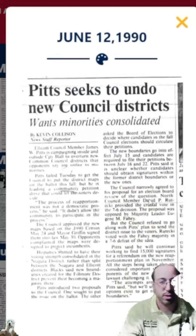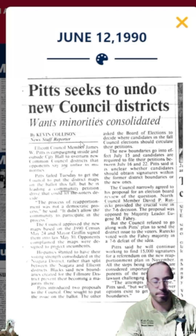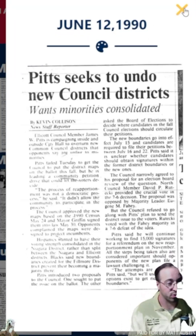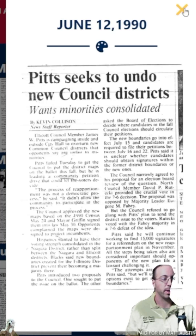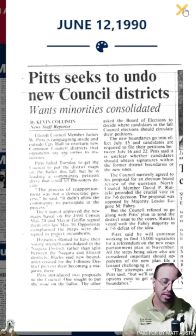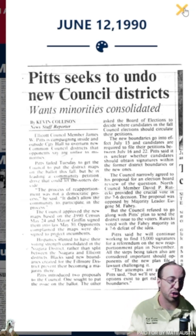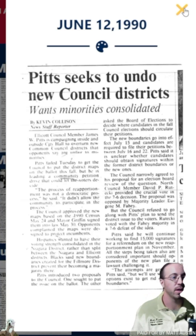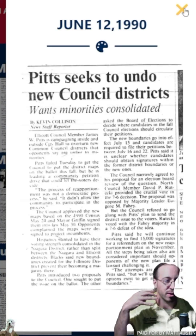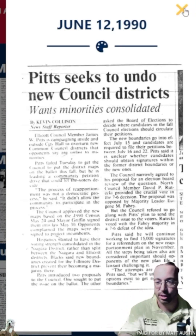June 12th is when the drama starts. Pitts sought to undo the new council districts. James Pitts, the former Ellicott council district member, started collecting signatures for a petition — he wanted a city referendum where citizens vote on a revision to the charter. As primary season was starting in mid-June, council member Pitts was trying to get a referendum and collecting signatures.